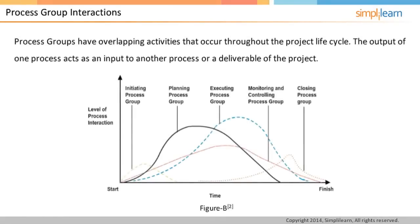Process groups have overlapping activities that occur throughout the project lifecycle. The output of one process group is generally the input to another or a deliverable of the project. For example, project management plan is an output of the planning process group and an input to the execution process group. Note that production of the plan is not a one-time activity. As the project progresses, the project management plan may get updated as a result of the monitoring and controlling processes.